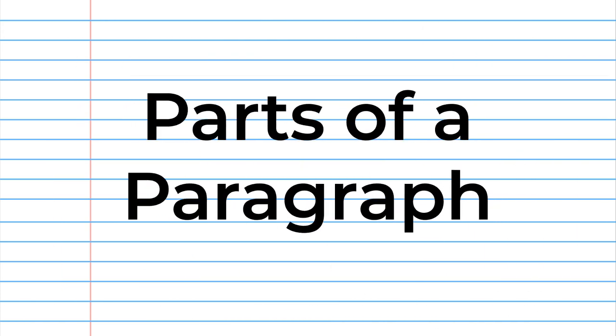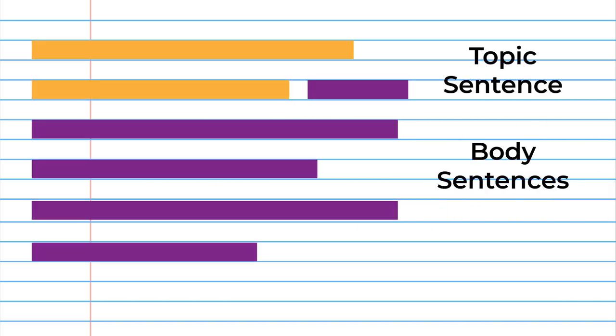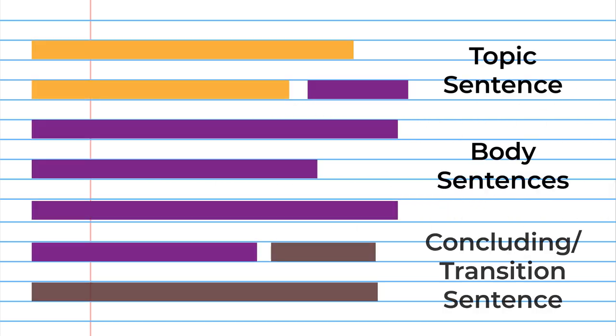There are three main parts of a persuasive paragraph: the topic sentence, the body sentences, and the concluding or transition sentence.